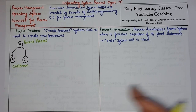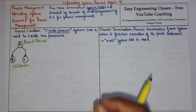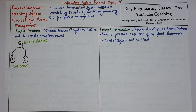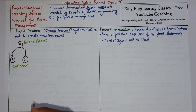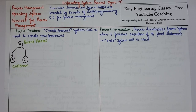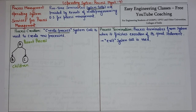Whenever a process is created, that process needs to be allocated some address space. There are two possibilities. One is the child is a duplicate of the parent process, in which case the child will be running in the parent process's address space. The second possibility is the child process has another program that is loaded into its own address space.